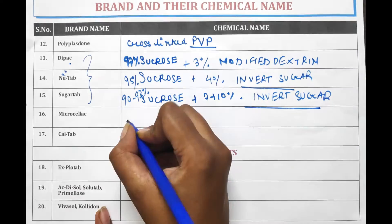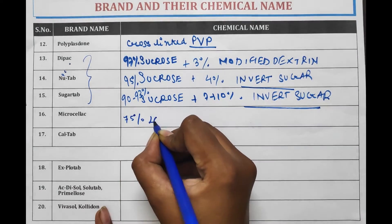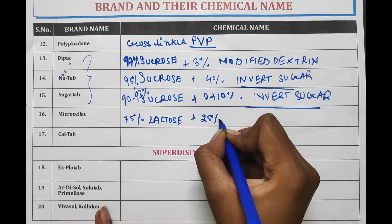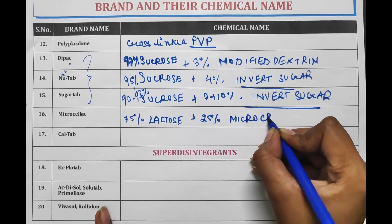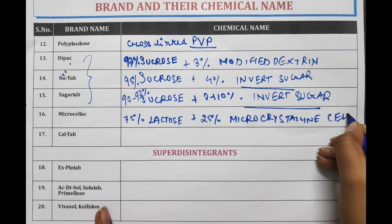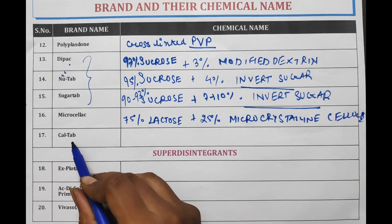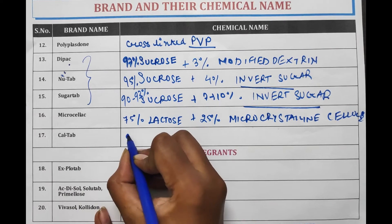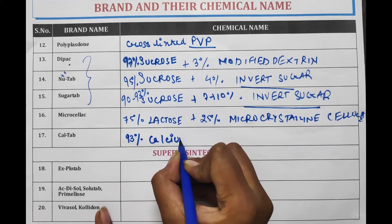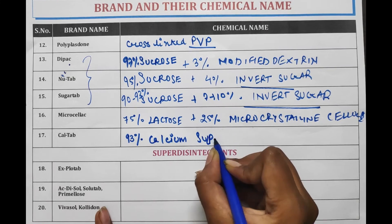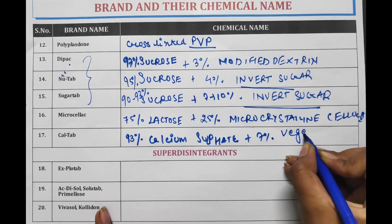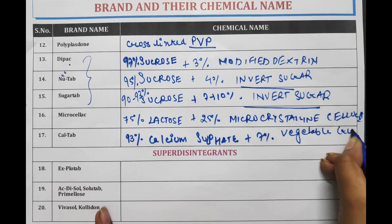Microsilac contains 75% lactose plus 25% Microcrystalline Cellulose (MCC). Caltab contains 93% calcium sulphate plus 7% of any vegetable gum.